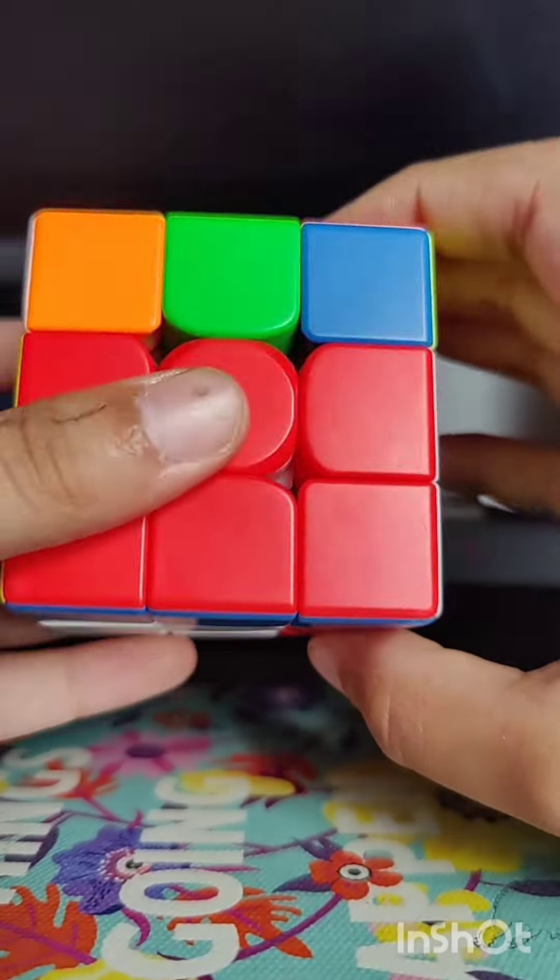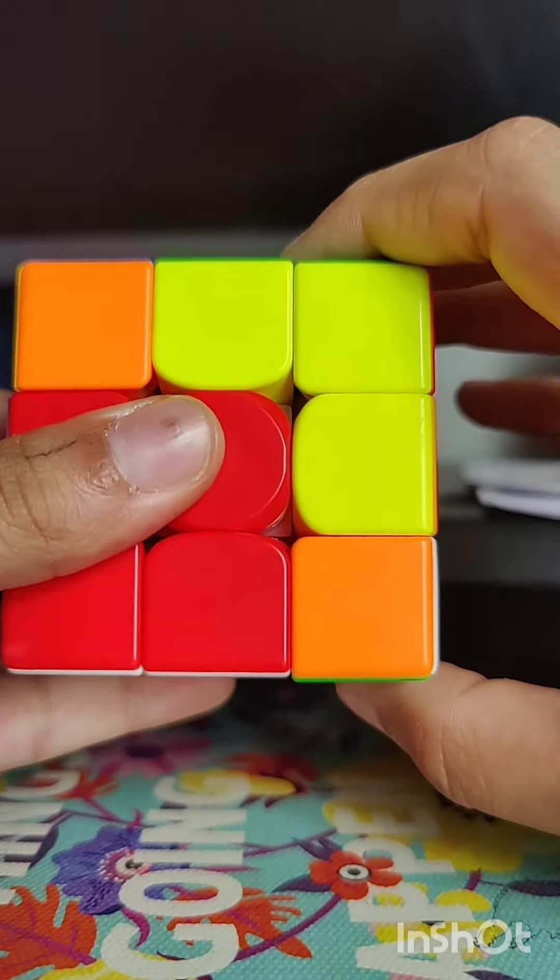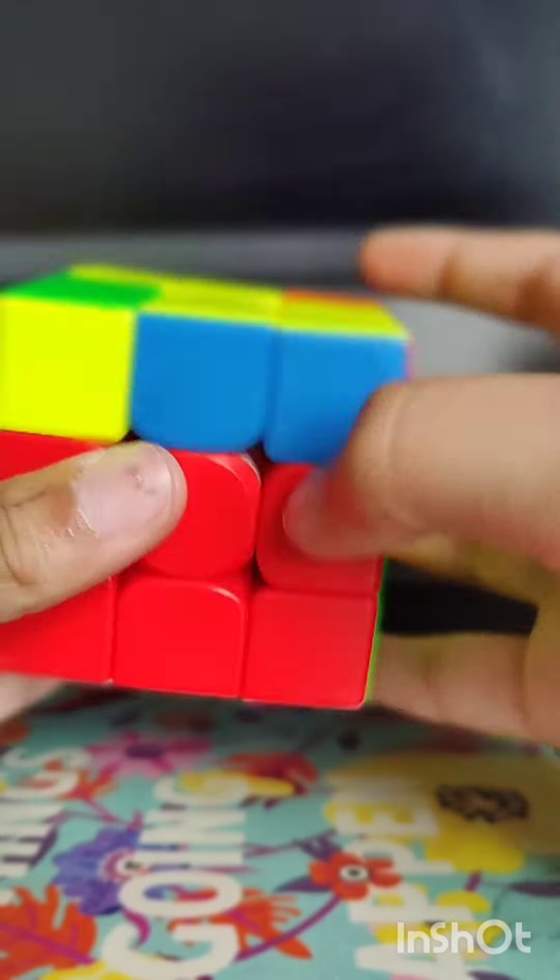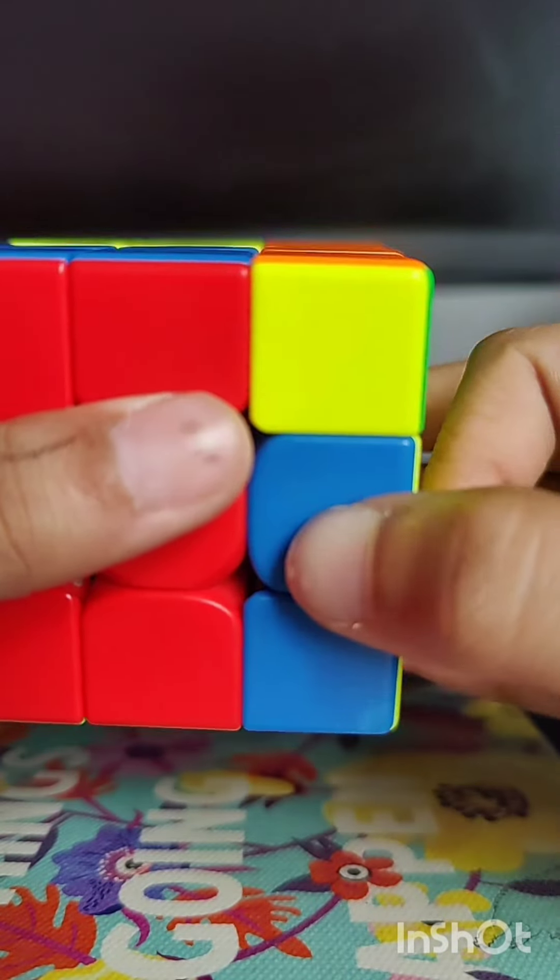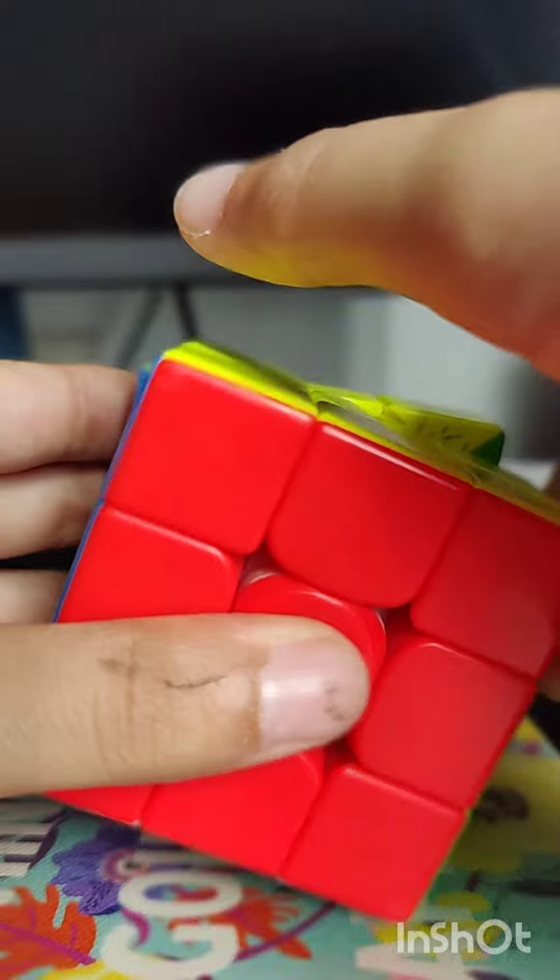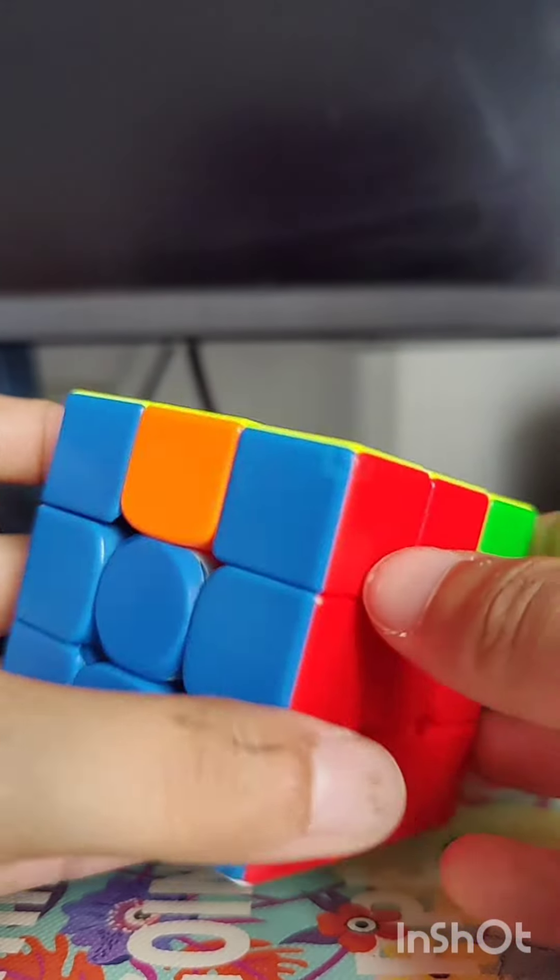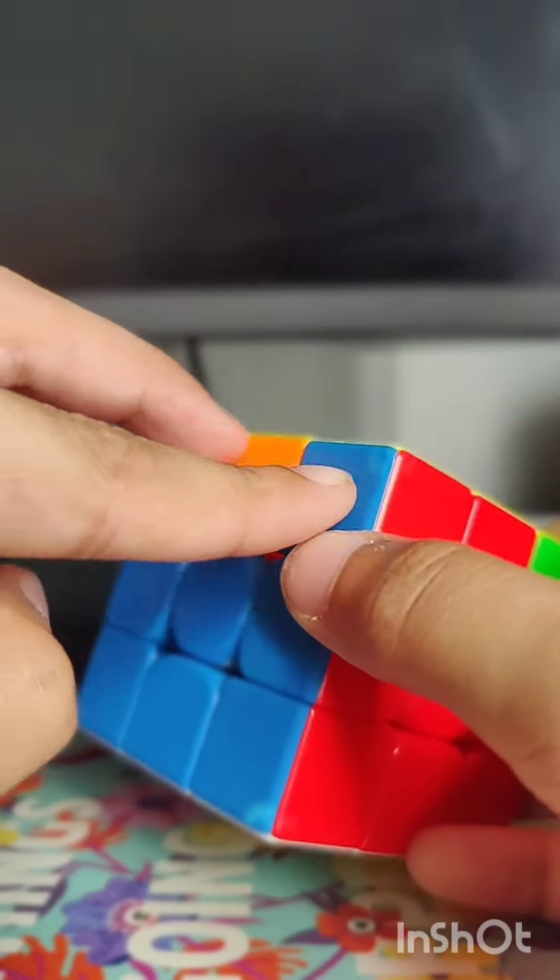We do a righty algorithm, so bring this corner to the back. Now we do a wide F R wide F prime. This is the RA perm where you have a bar here and headlights, no bar at the back.